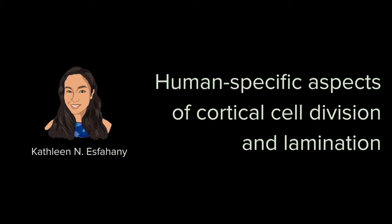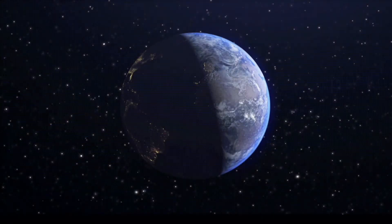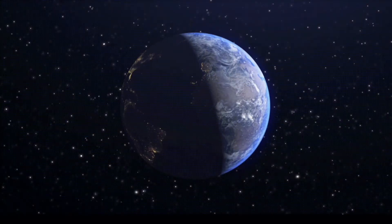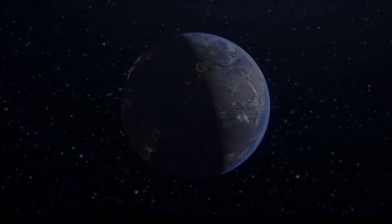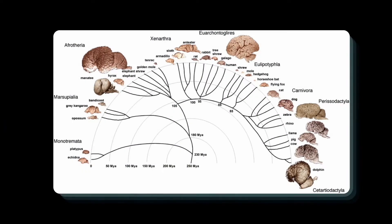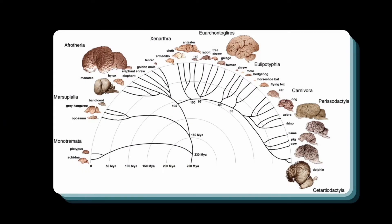Hi, I'm Kathleen Esfahani. Let's talk about human-specific aspects of cortical cell division and lamination. Hundreds of millions of years of nervous system evolution has generated an enormous diversity of brain morphologies that endow each species with unique abilities to perceive and process information from the world around them.